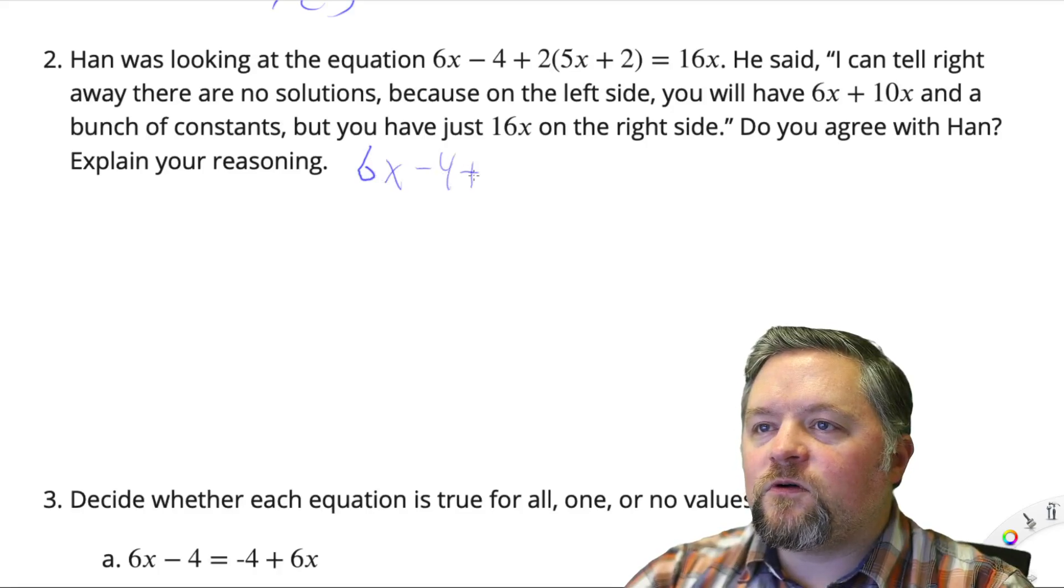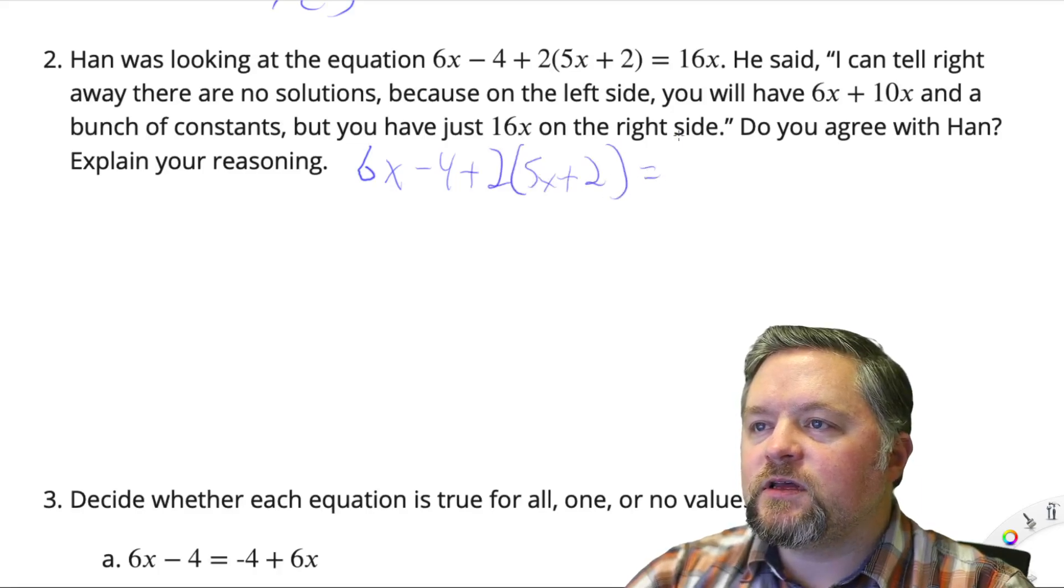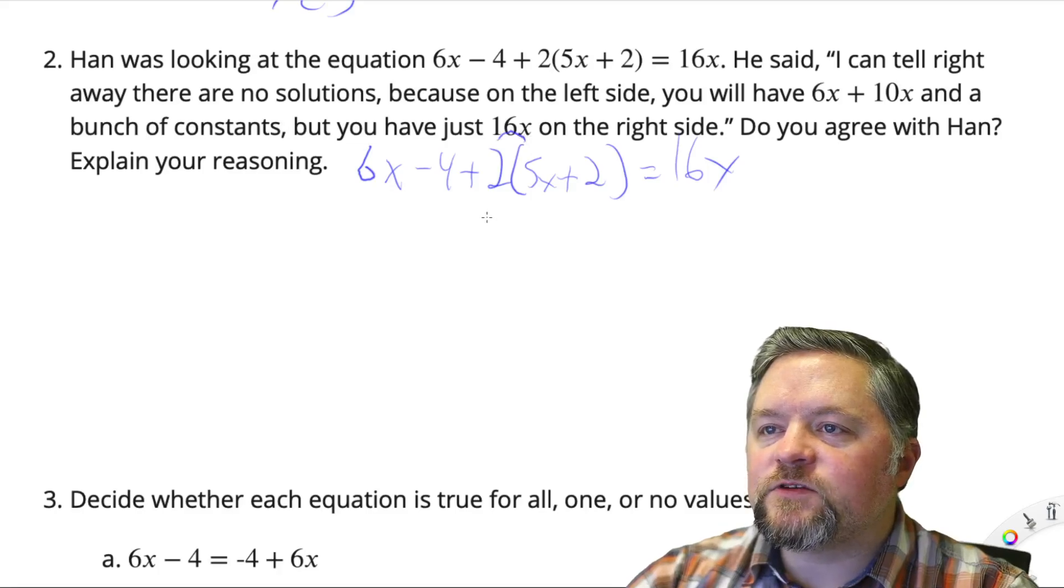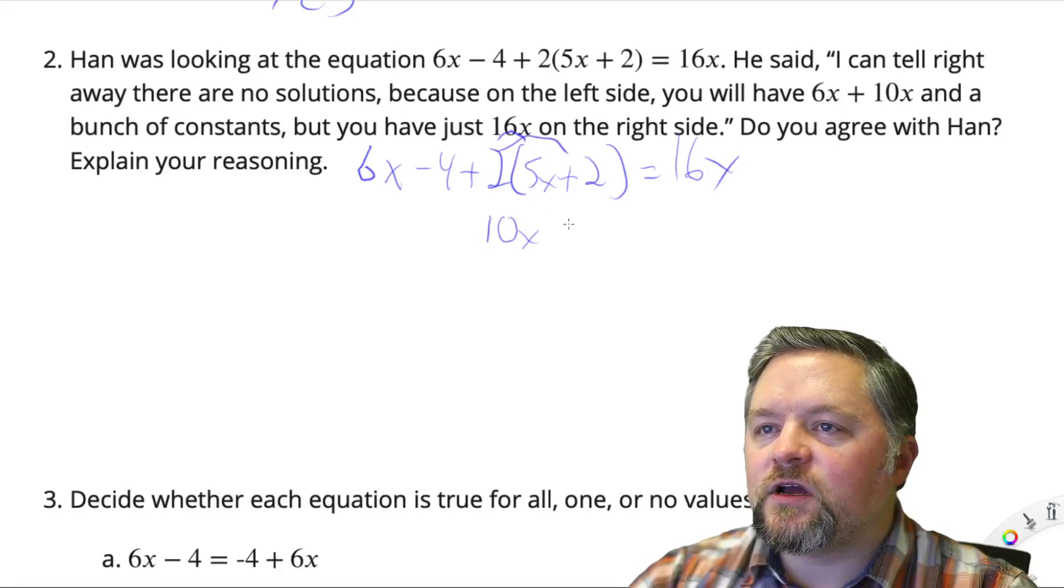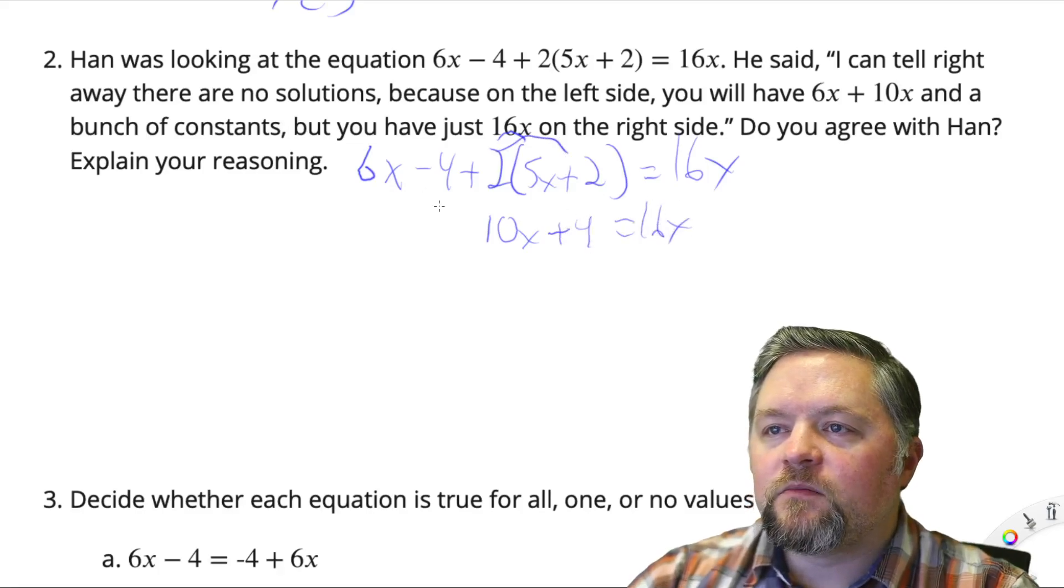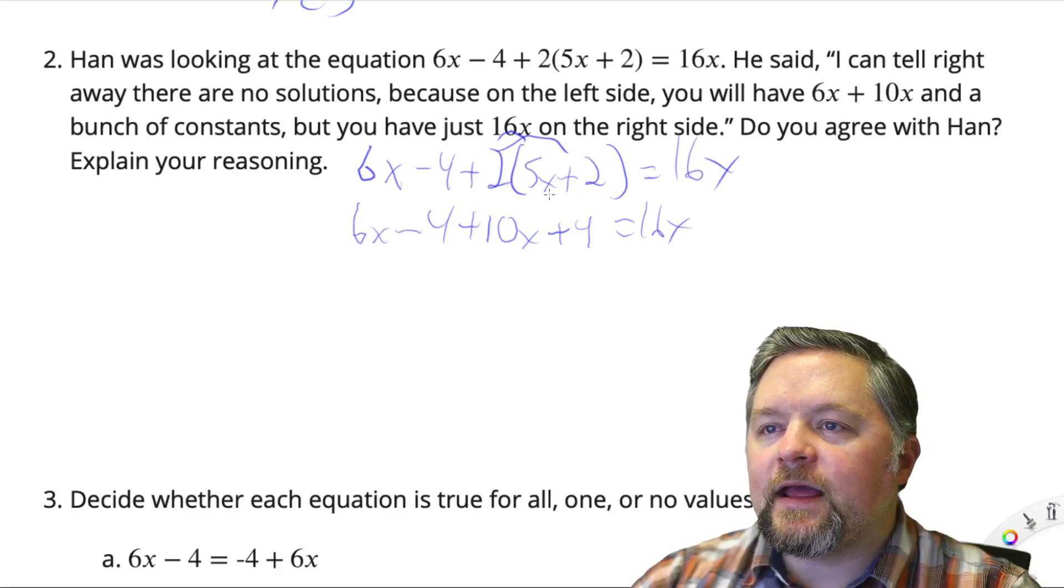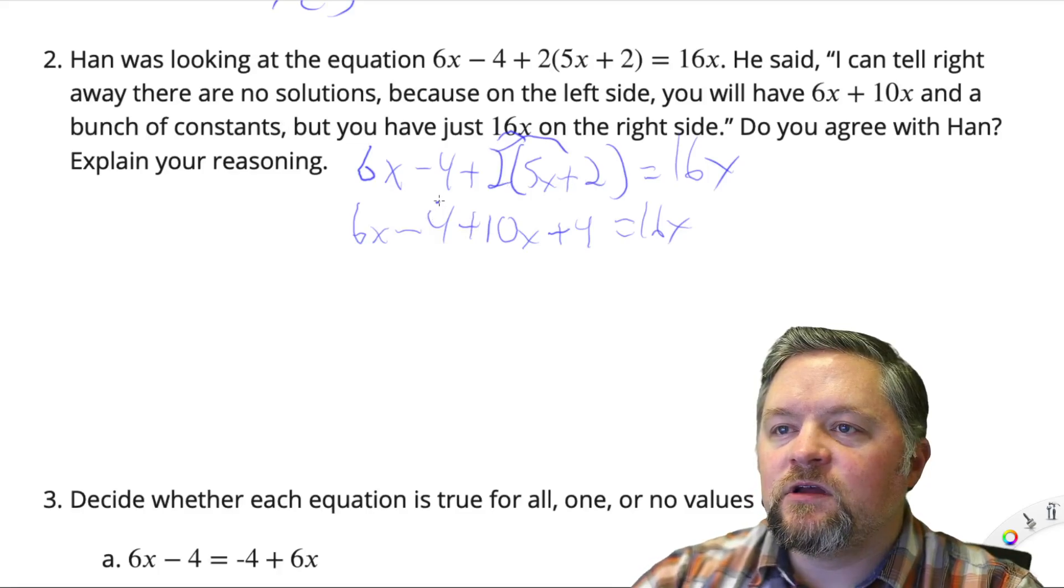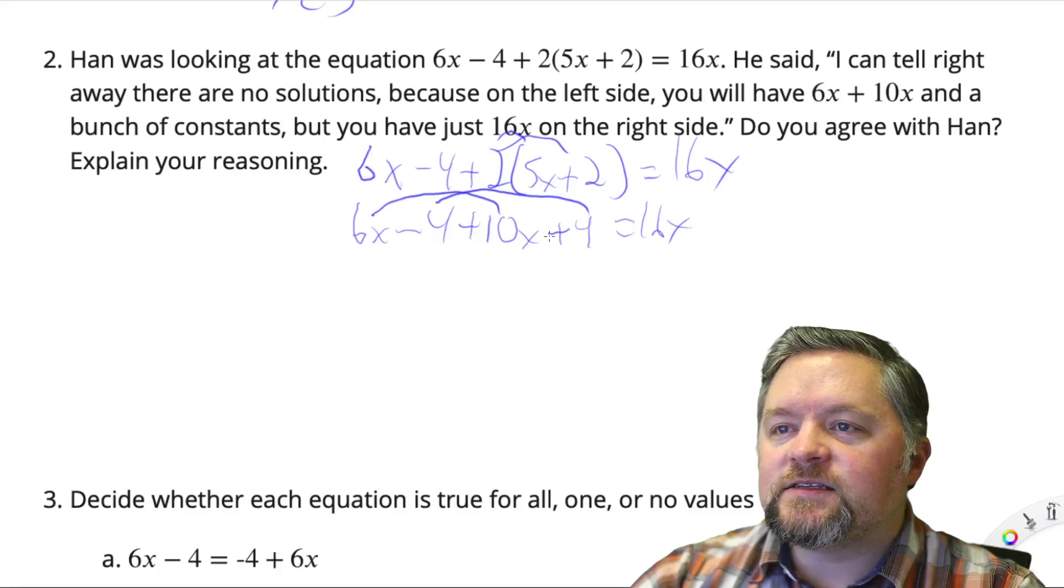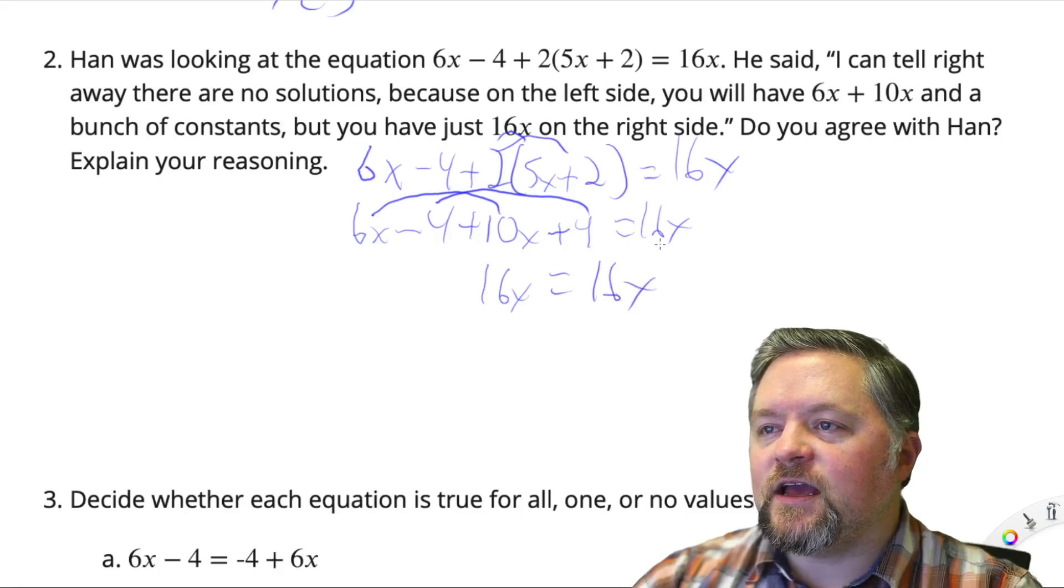6x minus 4 plus 2 times 5x plus 2 equals 16x. If I distribute, 2 times 5x is 10x, 2 times 2 is 4. Bring down the other stuff. Now, let me combine like terms. Well, a negative 4 and a plus 4 is 0. And 6x and 10x is 16x equals 16x.